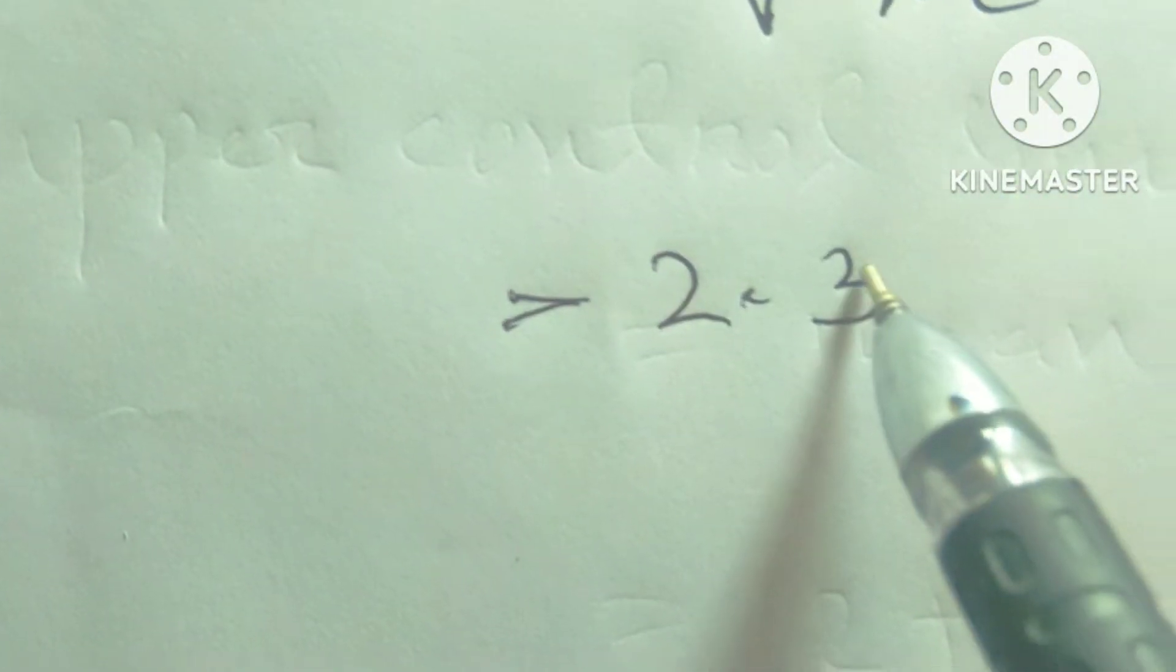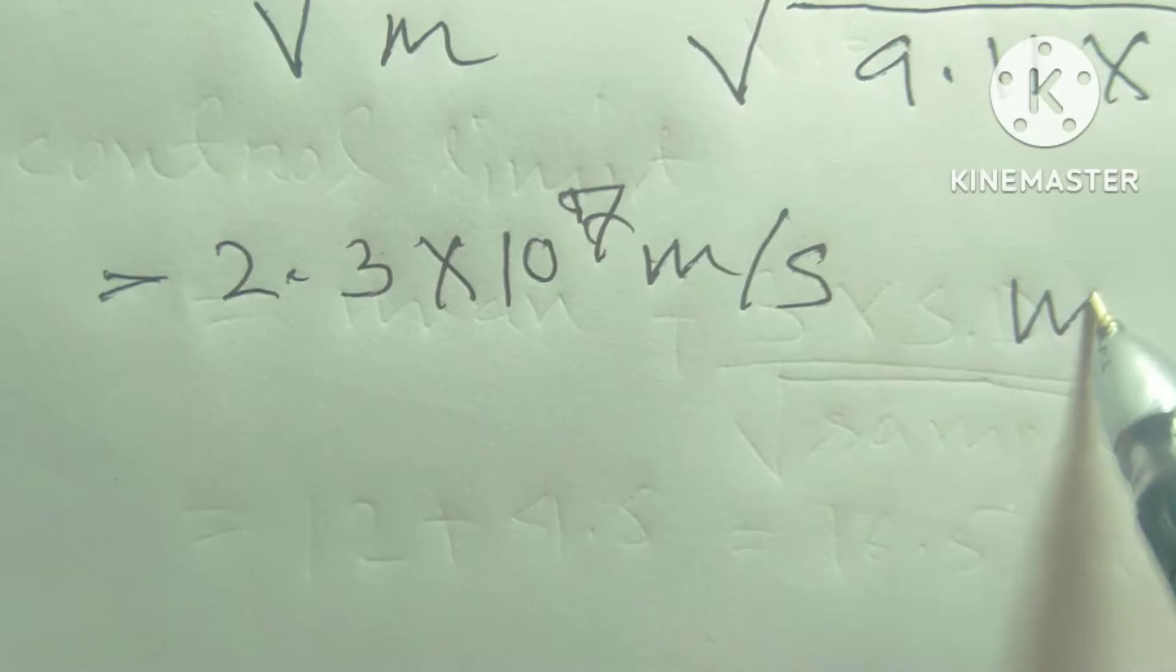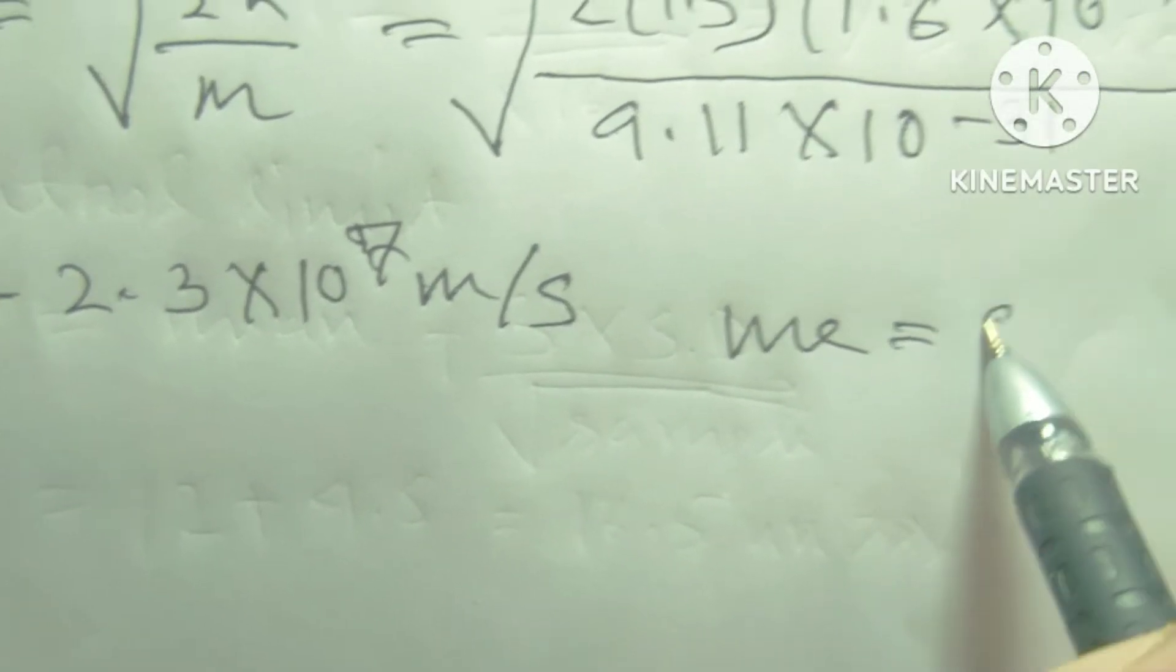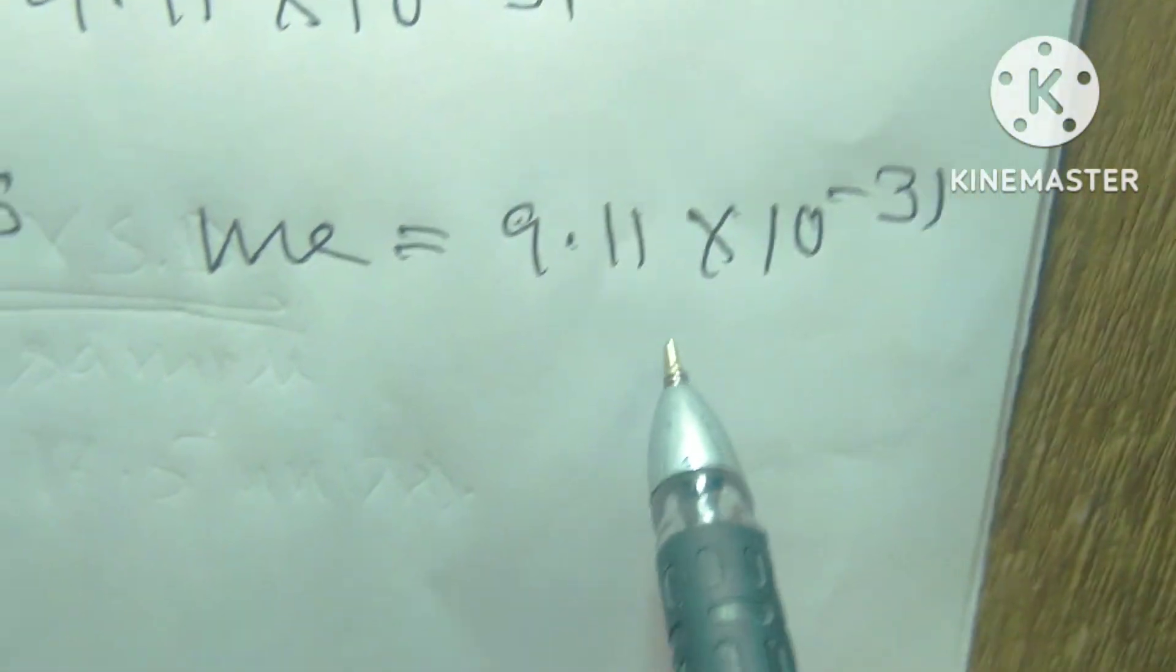So the value is 2.3 times 10 to the power 7 meter per second. Must remember, mass of the electron equals 9.11 times 10 to the power minus 31 kg.